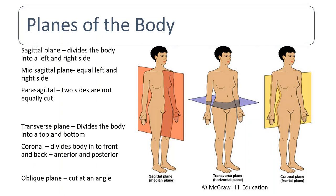Now let's discuss the planes of the body. You have the sagittal plane, transverse plane, coronal plane, and oblique plane. The sagittal plane divides the body into left and right. The transverse plane divides the body into top and bottom. Another name for the transverse plane is the horizontal plane.